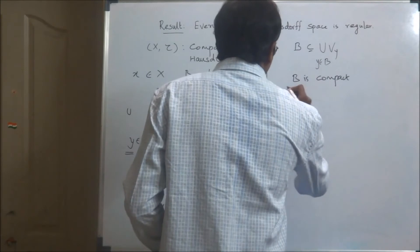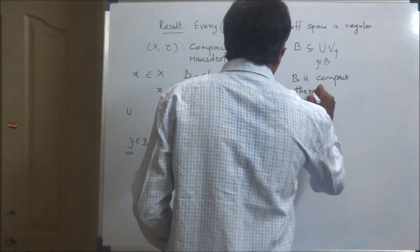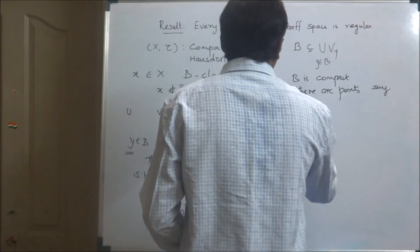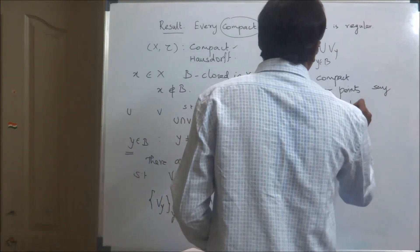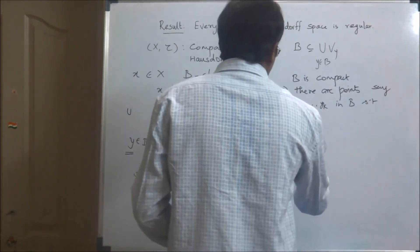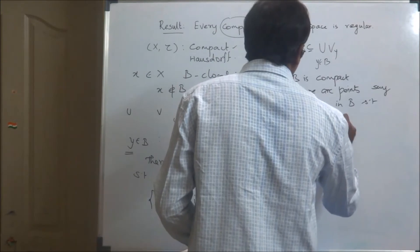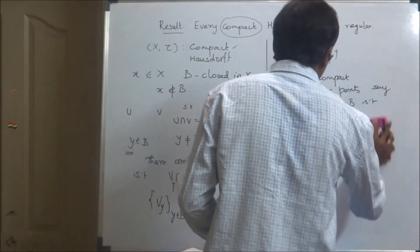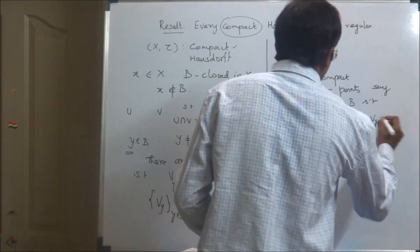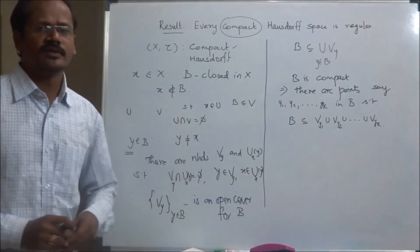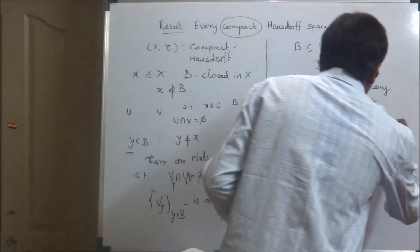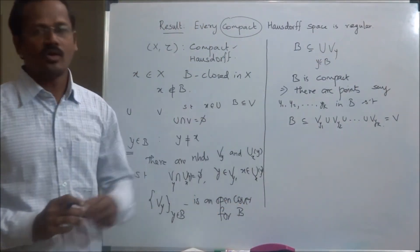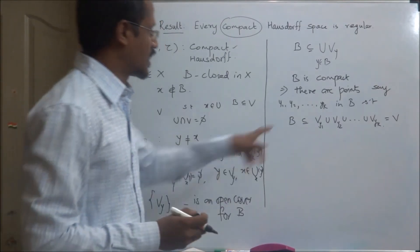By compactness, there are points y1, y2, ..., yk in B such that B is a subset of V_y1 ∪ V_y2 ∪ ... ∪ V_yk. If we take V to be this finite union, then V is an open set, because it is a union of open sets. Therefore, V is an open set that contains B.